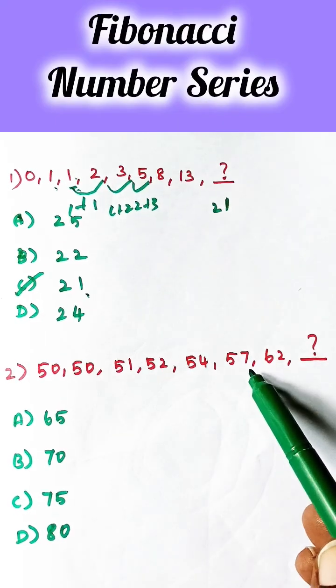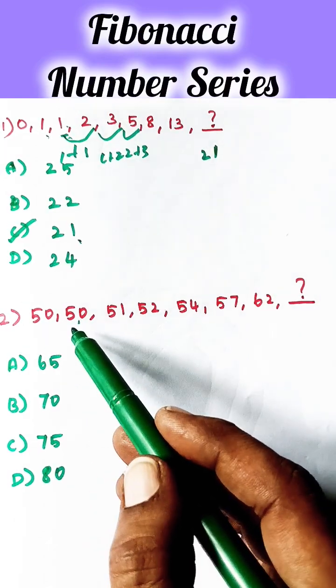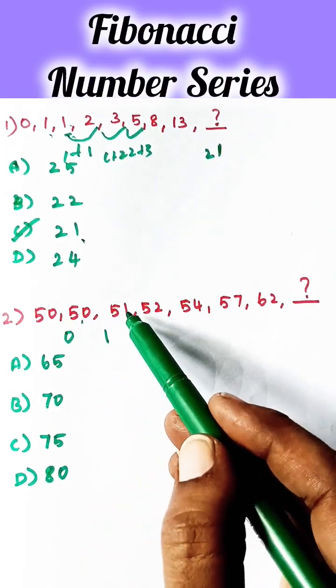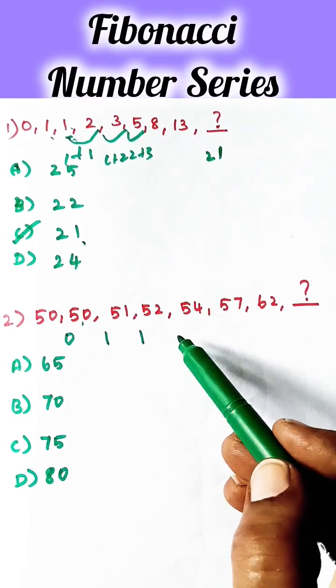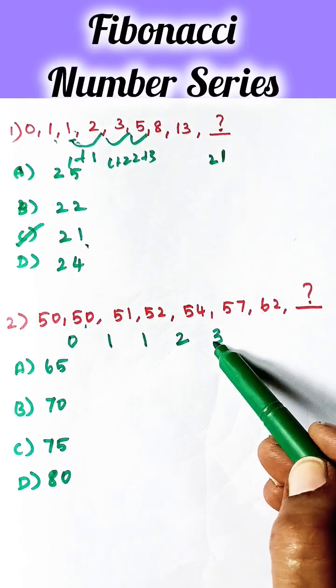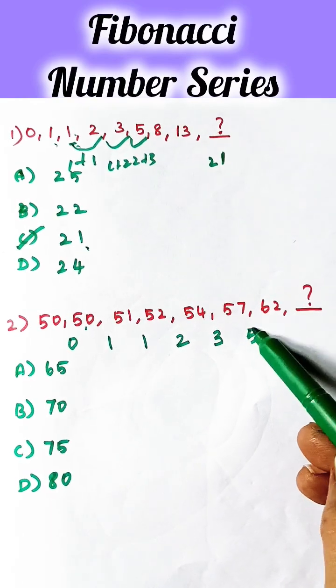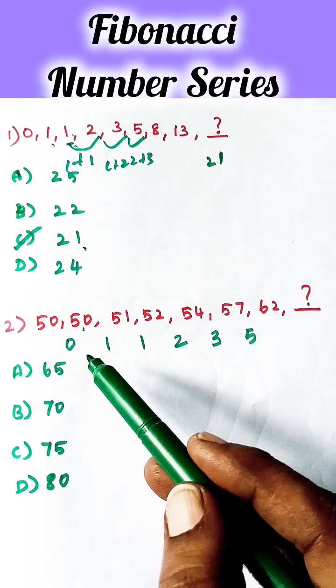The numbers are in increasing order, so make a difference. 50 minus 50 is 0, 50 minus 51 is 1, 51 minus 52 is also 1, 52 minus 54 is 2, 54 minus 57 is 3, 57 minus 62 is 5. So next, to find out this term, you have to find out the relationship between these numbers.